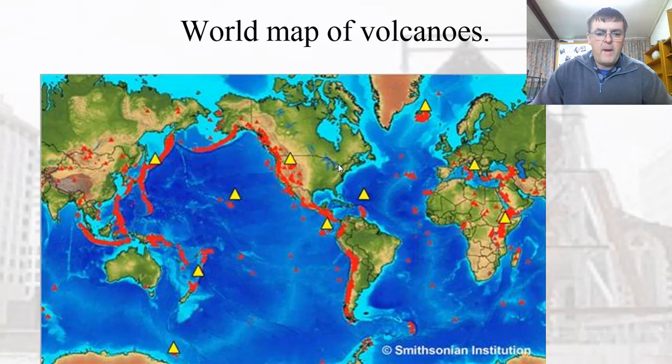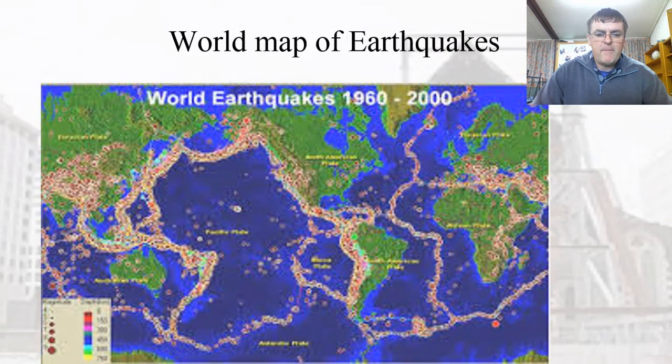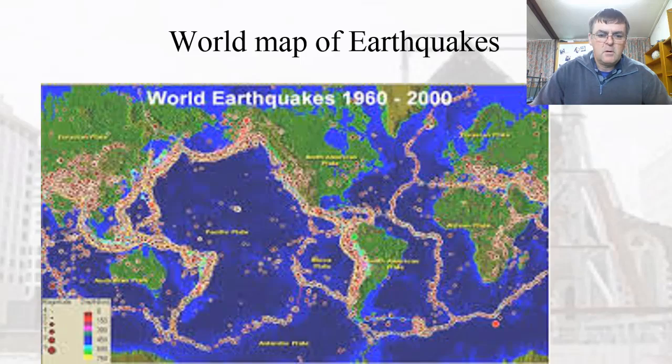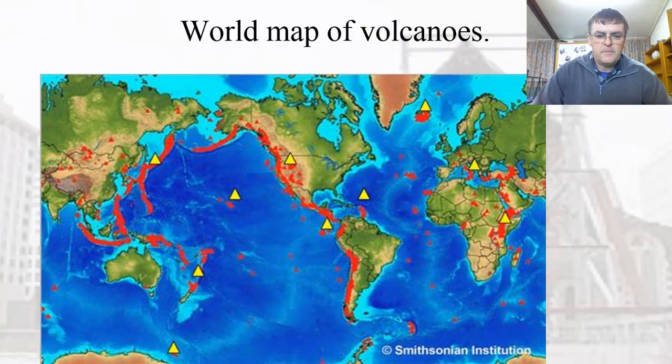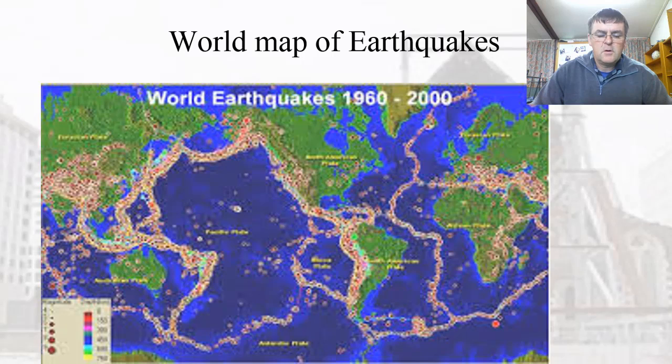So if we look at a world map of volcanoes, where they are, and then we overlay a map of where the earthquakes happen, do you see something similar? There's the volcanoes, there's the earthquakes. That tells us something about how the Earth's crust is put together.